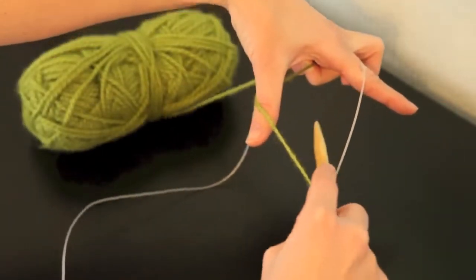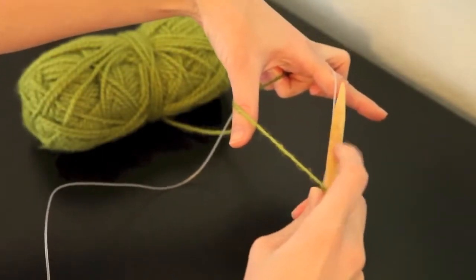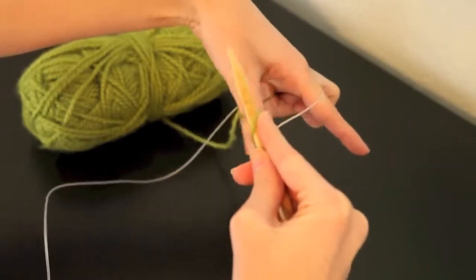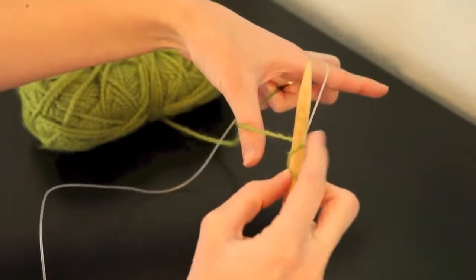The first step is to take your needle and put it down in between the yarn and the cable. Then bring it up by the yarn. That's your first stitch.